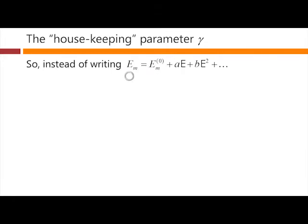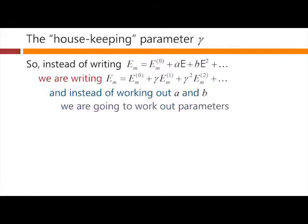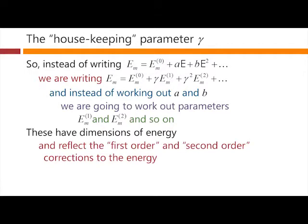So now we can express changes as orders of gamma — gamma to the 1, gamma to the 2, and the zeroth-order result corresponds to gamma to the power 0. Instead of writing the eigenenergy as the initial value plus something proportional to the perturbation plus something proportional to its square, we write it as the initial value plus gamma times E_m1 plus gamma-squared times E_m2. These terms have dimensions of energy; gamma is a dimensionless quantity. They reflect the first-order and second-order corrections to the energy resulting from this specific perturbation.